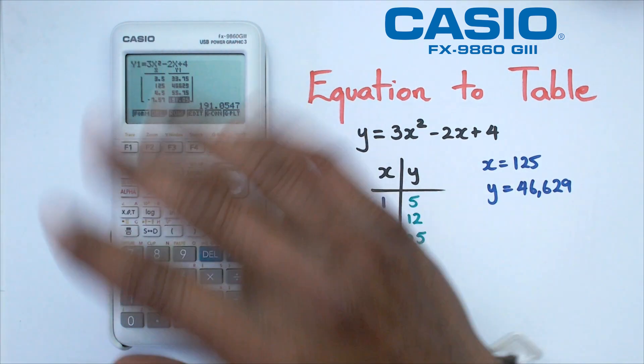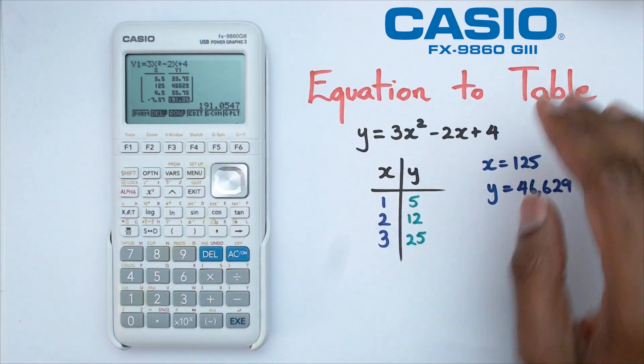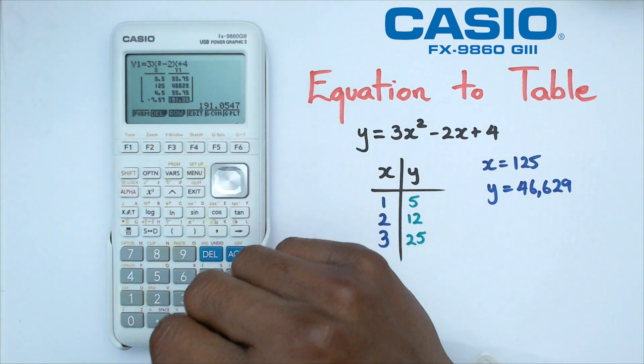And that pretty much covers how to go from equation to a table on this particular Casio graphics calculator.